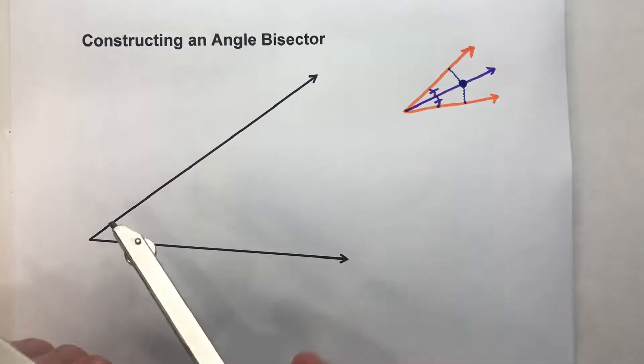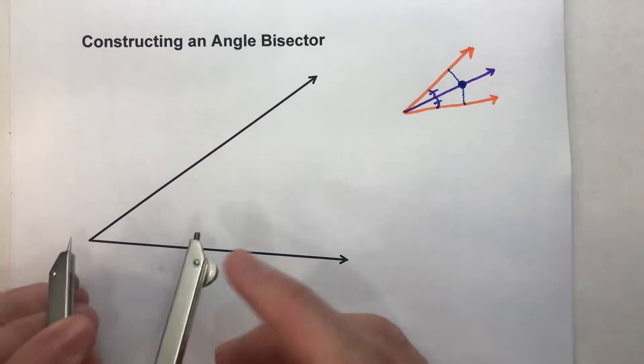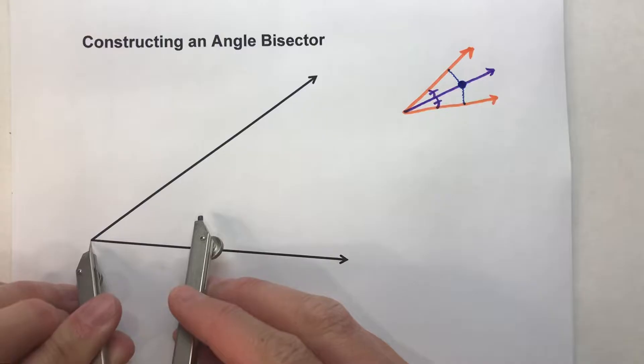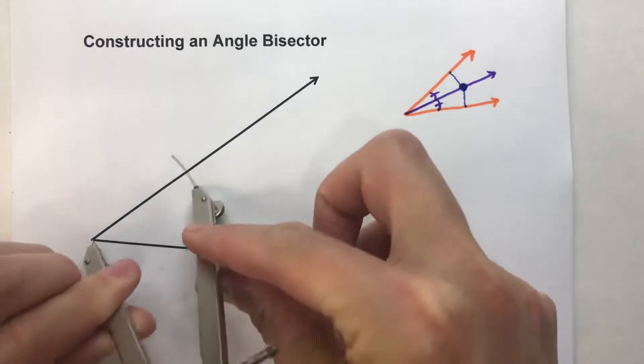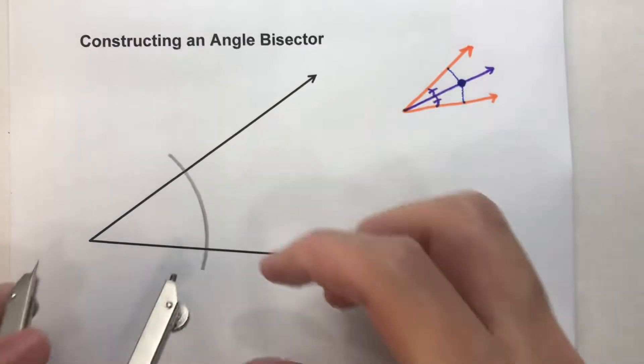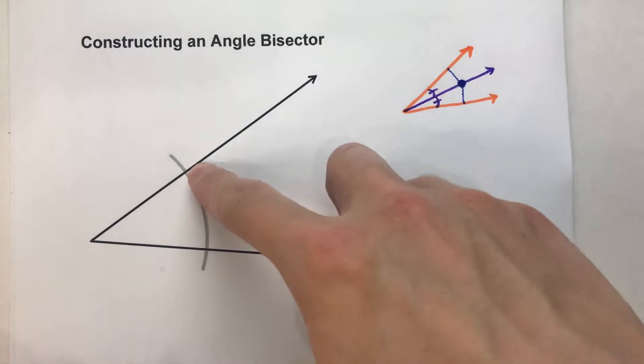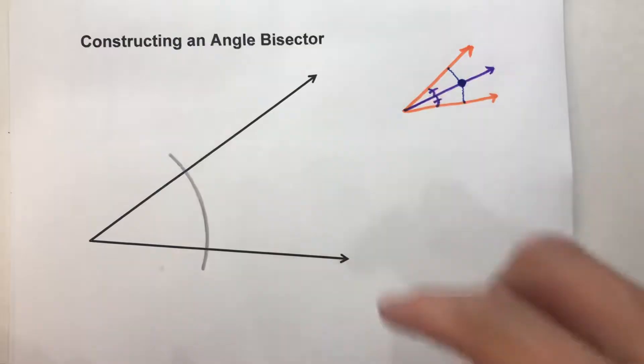So I've got a compass here and I'm going to set my compass so that I swing an arc off of the vertex of the angle and I hit the sides of the angle somewhere so that I hit it on both sides of that angle.